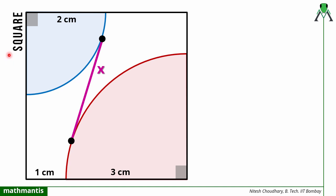Hello everyone, welcome back to my channel Mathematics. In this question we have been given a square. In the square there are two quadrant circles. One quadrant circle takes this point as the center with radius 2 centimeter. There is another quadrant circle — the red circle — taking this as the center, with radius 3 centimeter and the side of the square is 4 centimeter. We have to find the length x.